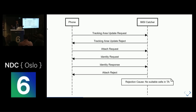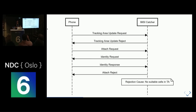And voila, you have the IMSI. The final step is to disconnect the phone, which you do in an attach reject. In the attach reject you attach a rejection cause — in this case, I'm attaching 'no suitable cells in this area'. This disconnects the phone from the IMSI catcher and the phone jumps straight back to the original legitimate network.